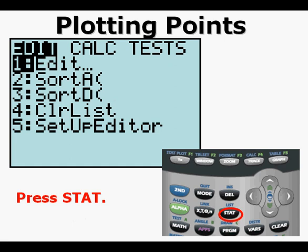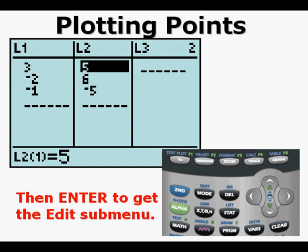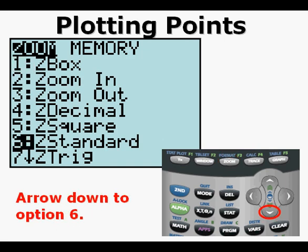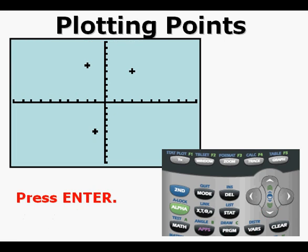Press STAT, then ENTER to get the EDIT submenu. Press ZOOM, arrow down to option 6 — ZOOM STANDARD — and press ENTER. We see the points we saw earlier, but now as plus signs.